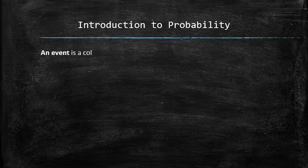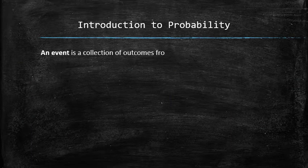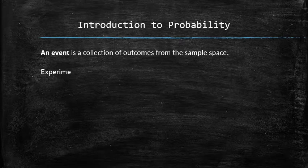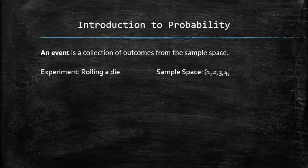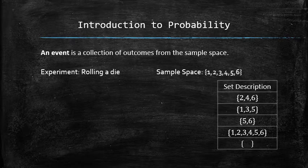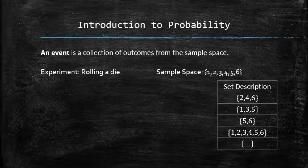An event is a collection of outcomes from the sample space of an experiment. For example, consider rolling a die for which the sample space is numbers one, two, three, four, five, and six. Any collection of simple outcomes from the list will define an event. Here are a few examples of sets created by including some of the outcomes from the sample space.